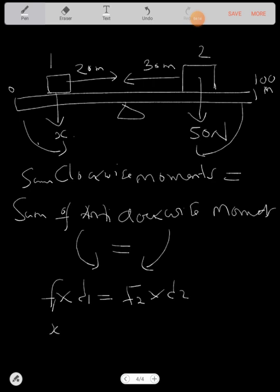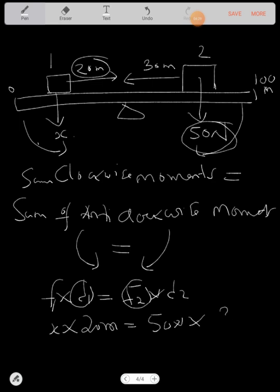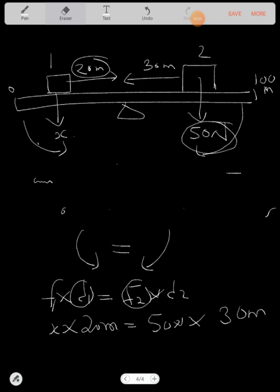Force 1, we call it x because we don't have times. The distance 1 is 20. So I'll say 20 meters. This is equal to force 2. We have this 50, 50 newtons times distance 2. We know that it's 30. So now we know that this is what we have. So we just formed an equation. So 20 times x, you have 20 meter x, which is equal to 50 times 30, you get 1,500 newton meter.